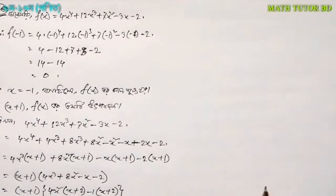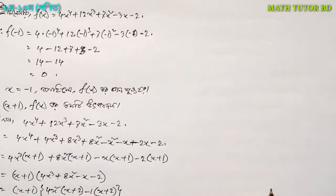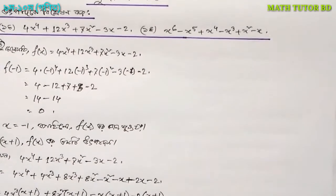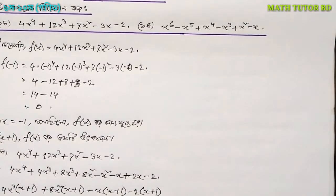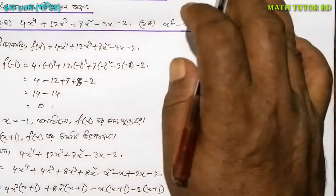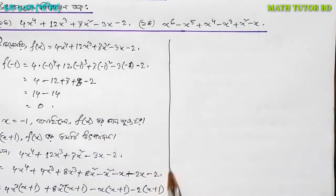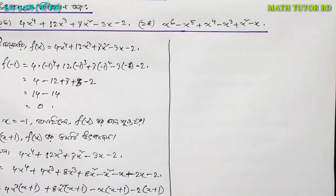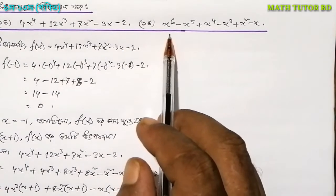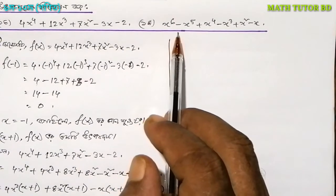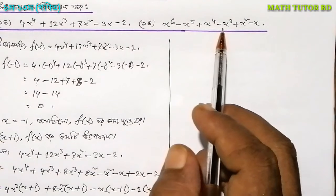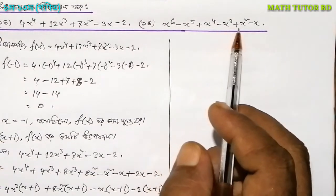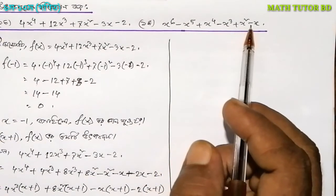Let's see the 4th number. Let's take x to the power of 6, minus x to the power of 5, plus x to the power of 4, minus x cubed, plus x squared, minus x.